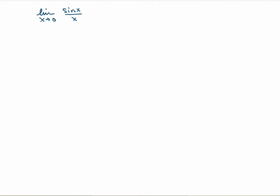Let me do a few examples of how you can use L'Hôpital's rule to evaluate indeterminate limits. Let's start with the limit as x goes to 0 of sine of x over x. The first thing is to check whether it's a type 0 over 0 or infinity over infinity. In this case this is 0 over 0, so that's fine. L'Hôpital's rule tells me that this is the same thing as the limit as x goes to 0 of the derivative of the function upstairs over the derivative of the function downstairs. Derivative of sine of x is cos of x. Derivative of x is 1. Now this is perfectly well defined — the limit of this expression as x goes to 0 is just 1.